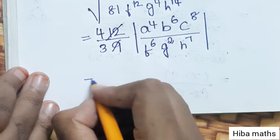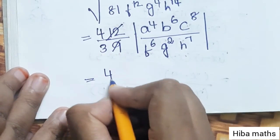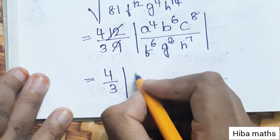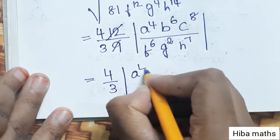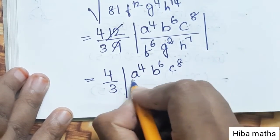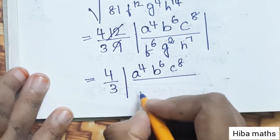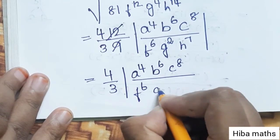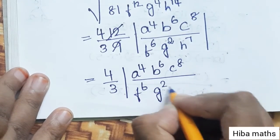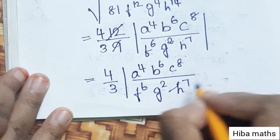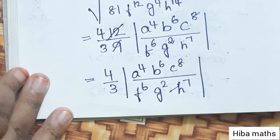So our final answer is 4/3 times the modulus of a power 4, b power 6, c power 8, divided by f power 6, g power 2, and h power 7.